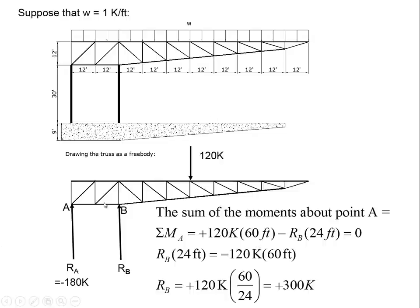And now relative to point A, Rb is to produce counterclockwise moments, so we put a minus Rb, and the lever arm between the line of action of Rb and point A is this horizontal dimension here, which is 2 times 12 feet, or in other words, 24 feet.